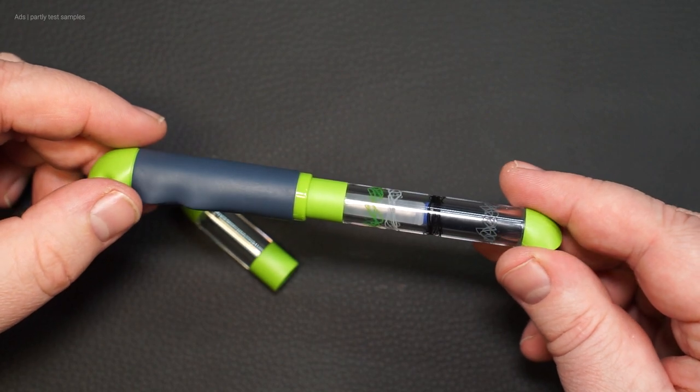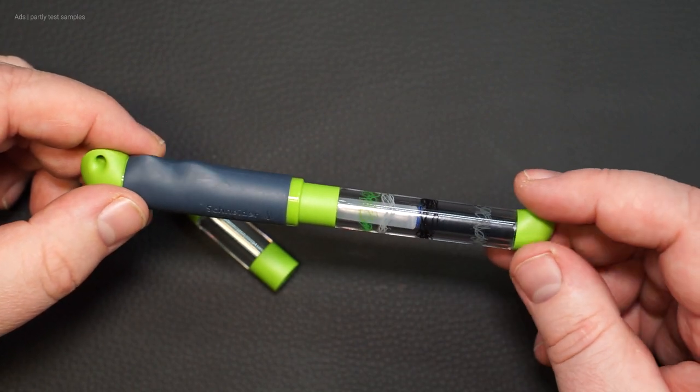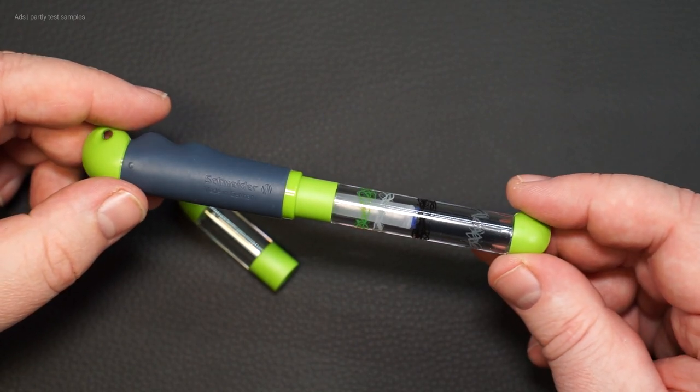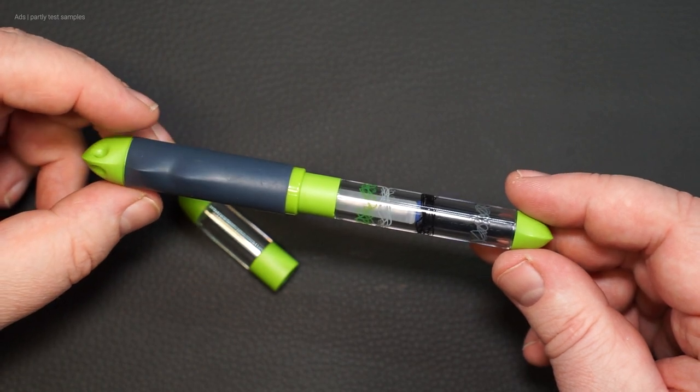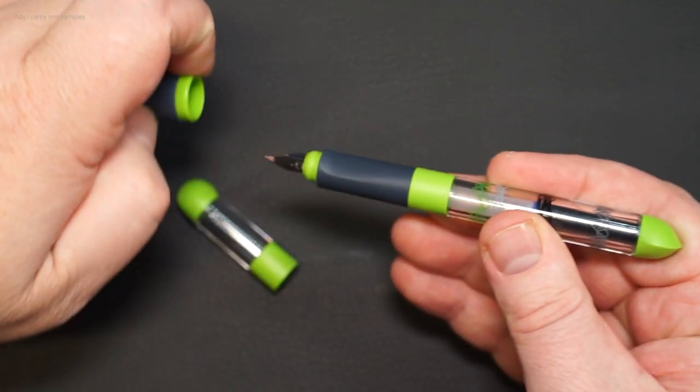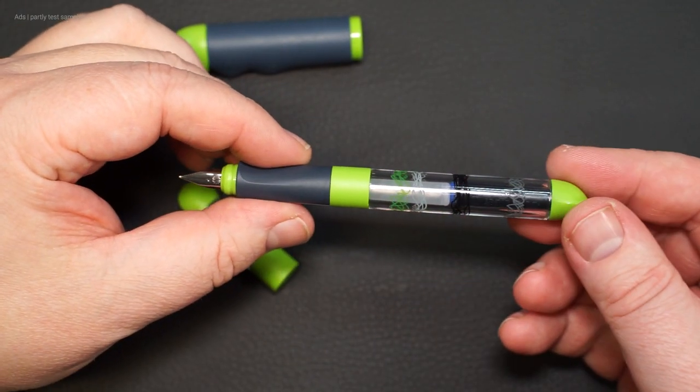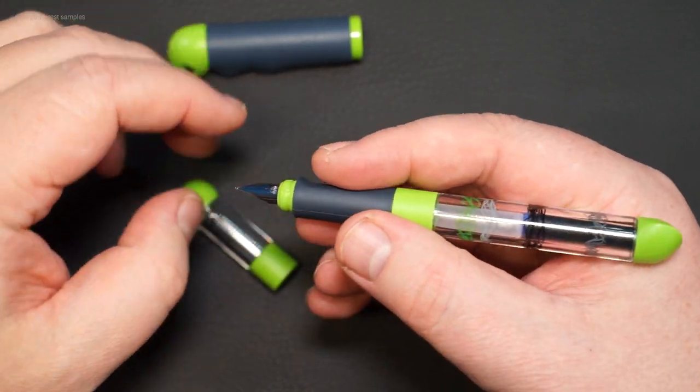The Schneider Base Kit. The base kit comes with two barrels. One short and one normal length. This allows you to adapt the fountain pen to the size of the children's hand. Of course, a replacement cartridge does not fit into the short barrel.